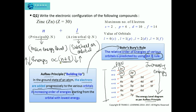Now, quickly reviewing the maximum number of electrons: an s orbital can accommodate 2, p can accommodate 6, d can accommodate 10, and f can accommodate 14. When l is 0 it is the s orbital, when l is 1 it is the p orbital, when l is 2 it is the d orbital, and when l is 3 it is the f orbital. Now we know the basis — it's time to write the electronic configuration of zinc with atomic number 30.